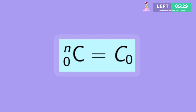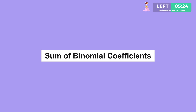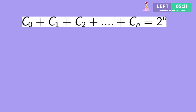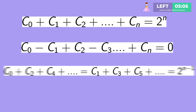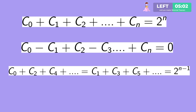Note: nC0 can be written as C0. Some binomial coefficient results: C0 plus C1 plus C2 up to Cn equals 2 to the power n — derived by putting x equals y equals 1 in the binomial expansion. Second: C0 minus C1 plus C2 minus C3 up to Cn equals 0. Third: C0 plus C2 plus C4 up to infinity equals C1 plus C3 plus C5 up to infinity, each equal to 2 to the power (n minus 1).